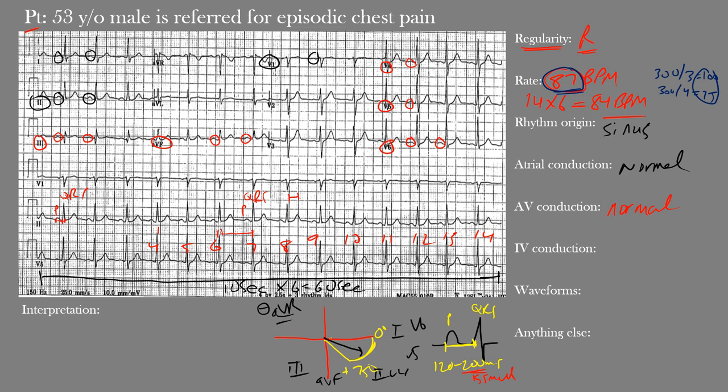For intraventricular conduction, we look at QRS duration. The normal QRS duration in adults is between 80 and 110 milliseconds, or about two to three small boxes. Here the QRS complexes are narrow and within normal limits — the QRS duration is 102 milliseconds, which falls within our 80 to 110 range. IV conduction is normal. A prolonged QRS would suggest conduction delay or aberrant conduction.